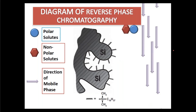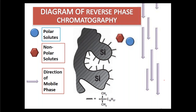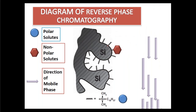In reverse phase mode, the stationary phase is non-polar — for example, a C18 column with long carbon chains. The non-polar solute is attracted to the non-polar stationary phase and is retained, while polar solutes do not have affinity toward the non-polar stationary phase. Since the mobile phase in reverse phase is more polar, the polar solutes remain in the mobile phase and move down the column faster.